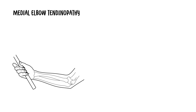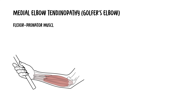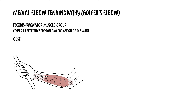Medial elbow tendinopathy, also known as golfer's elbow, involves tendinosis at the common origin of the flexor pronator muscle groups, typically caused by repetitive flexion and pronation of the wrist. It is frequently observed in athletes involved in throwing sports, racquet sports, and golf.